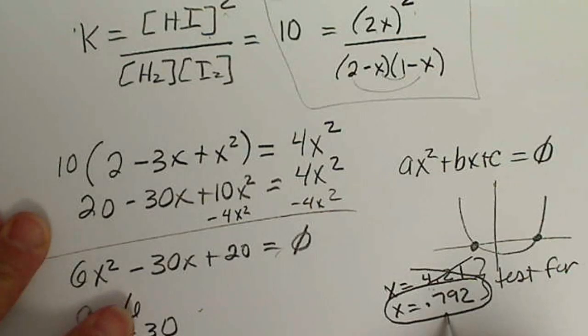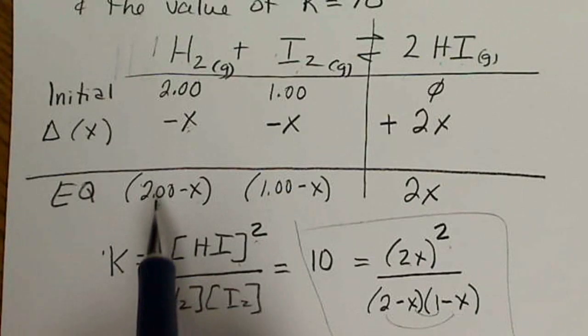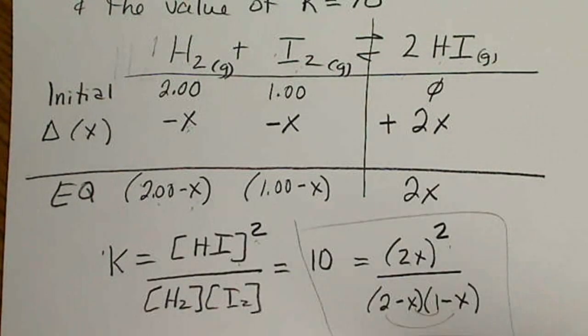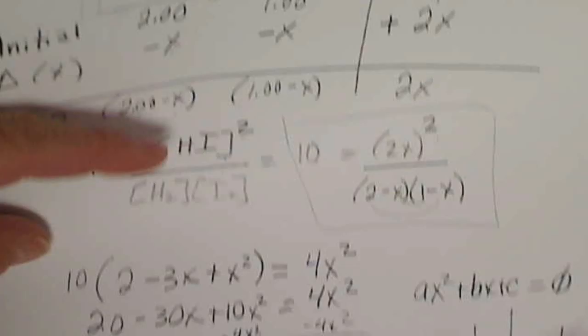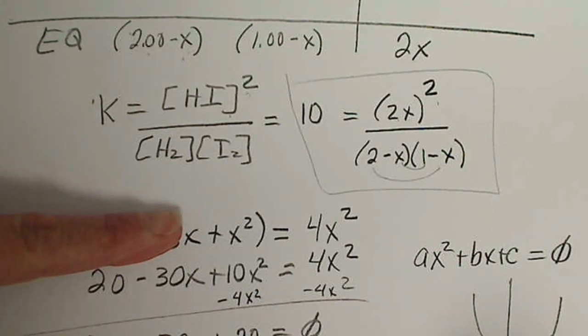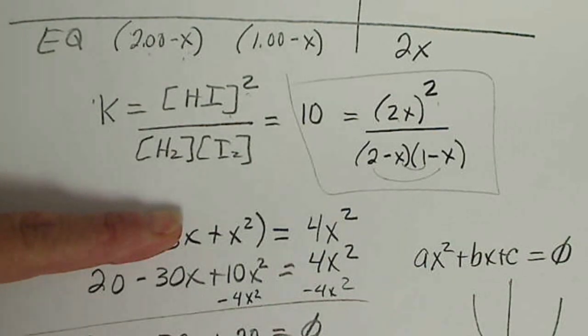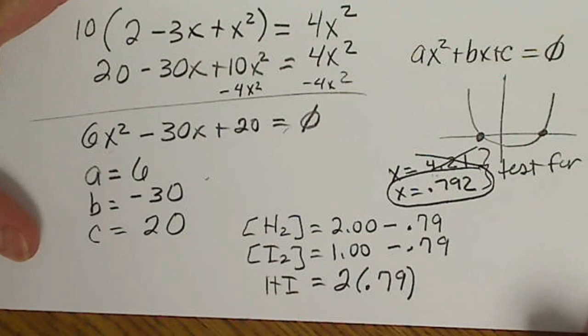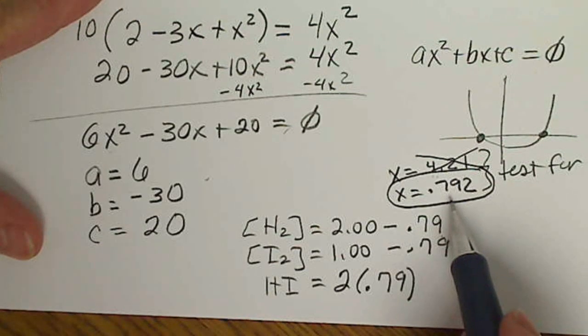So the only root that makes sense is that we're still not done. We've solved for X and now we're going to plug X back into these equilibrium values. So at equilibrium, we have that H2 is 2.00 minus 0.79, I2 is 1.00 minus 0.79, and HI is equal to 2 times 0.79.